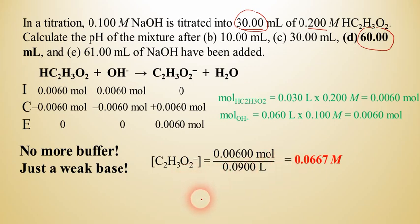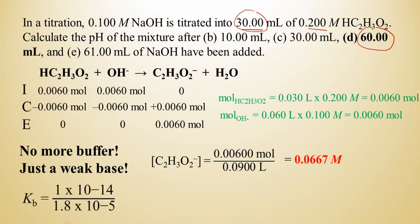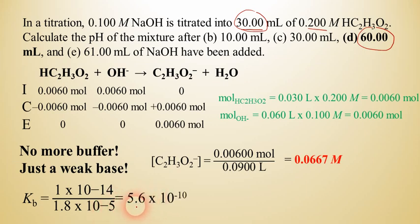To find the pH of this weak base, we need the Kb value, which wasn't given — only Ka was. So we calculate Kb = Kw/Ka = (1 × 10⁻¹⁴) / (1.8 × 10⁻⁵) = 5.6 × 10⁻¹⁰.